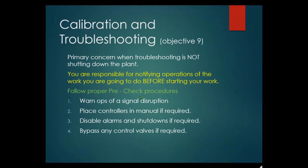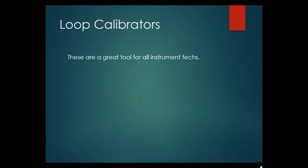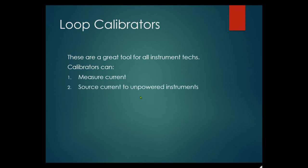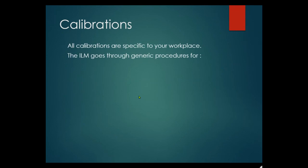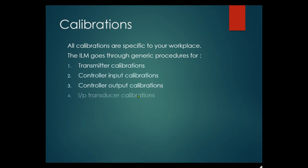Calibrations in the shop are best, but you still have to break the loop to install a new transmitter. Loop calibrators are great tools for instrument techs — you can measure current, source current on powered instruments using tools like the 724, 375, or Trek calibrators. Fluke meters also offer options. All calibrations are specific to your workplace. The ILMs cover transmitter calibrations, control input calibrations, controller output calibrations — trims, zeros, I/D/P transducer calibrations.